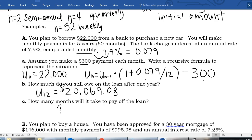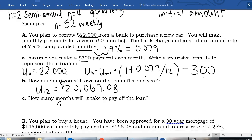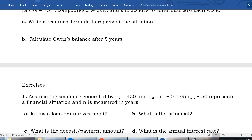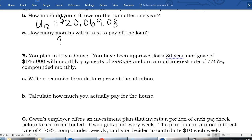Example B says you plan to buy a house. You have been approved for a 30-year mortgage of $146,000 with monthly payments of $995.98 and an annual interest rate of 7.25% compounded monthly. Write a recursive formula to represent the situation. So I need my principal, my u0, my starting amount. I am borrowing $146,000 so that's my starting amount.